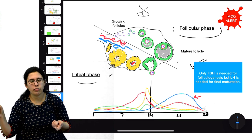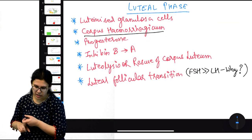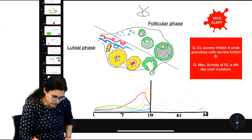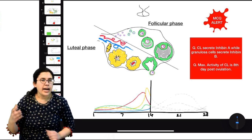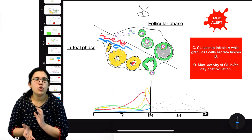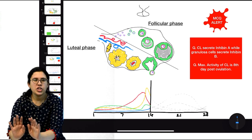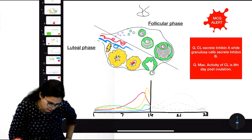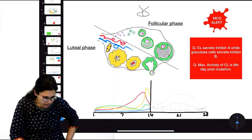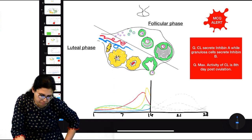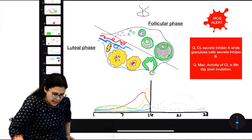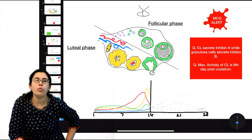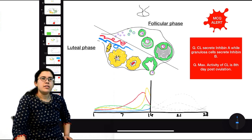LH is not needed yet — if LH comes first, it will create an androgenic environment, which we don't want. We want an estrogenic environment via FSH. Only FSH is responsible for folliculogenesis; LH is needed later in follicular maturation. FSH will come and rescue a new cohort of follicles, pushing them into competition to become the dominant follicle. This concludes the ovarian cycle — in the next video we will discuss the uterine cycle.